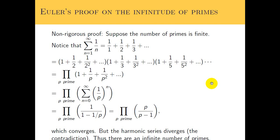Welcome to the third and final part of the lecture series on the Birch–Swinnerton-Dyer conjecture from my master's degree. Last time we talked about the L-function and we defined it as a Dirichlet series — for instance, a Dirichlet series where the coefficients are just 1 on top constantly, evaluated at s equals 1.